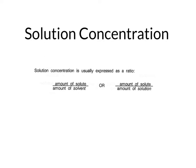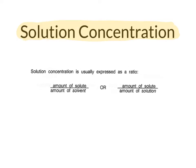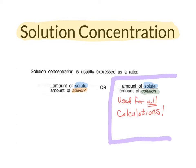Now we're going to talk a little bit about solution concentration. Solution concentration is generally expressed as a ratio between the solute and either the solvent or the solution. In this class, the one that we will be using for all of our calculations will be the amount of solute divided by the amount of solution. All calculations will use this ratio. We will talk about the other ones but we don't use them for calculations.